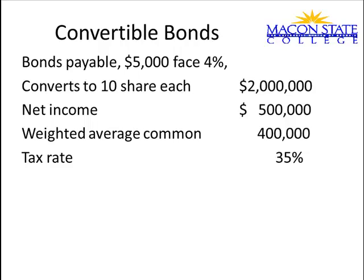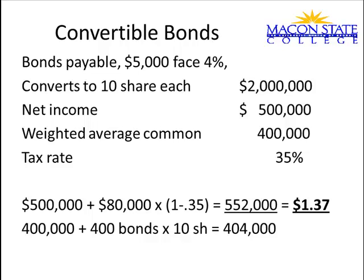You can freeze this frame and try to work it, or watch me work it. For the numerator, I add back $80,000 — that's 4% times $5,000 times 400 bonds — then multiply by (1 − 0.35) to get the after-tax rate. For the denominator, we have the weighted average common, and I have 400 bonds which is $2,000,000 divided by $5,000, and each converts into 10 shares, so I add 4,000 new shares to the denominator. My new earnings per share is $552,000 divided by 40,000 shares, which is $1.37.